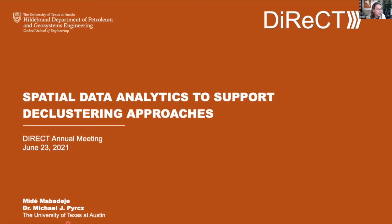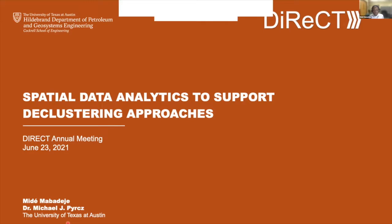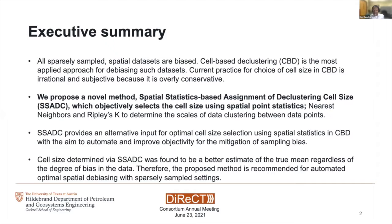Morning everyone. I'll be giving two presentations today, but we'll be starting off with spatial data analytics to support declustering approaches. We know that all sparsely sampled spatial data sets are biased, and cell-based declustering is the most applied approach for debiasing such data sets. The current practice for the choice of cell size in cell-based declustering is irrational and subjective because it's overly conservative. We propose a novel method called spatial statistics-based assignment of declustering cell size, which objectively selects the cell size using spatial point statistics such as nearest neighbor and Ripley's K to determine the scales of data clustering between data points. Using this method, we aim to automate and improve objectivity for the mitigation of sampling bias in our data sets.